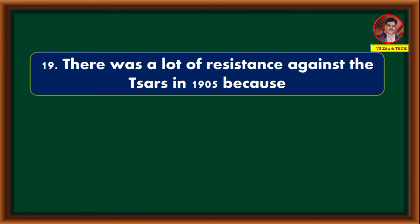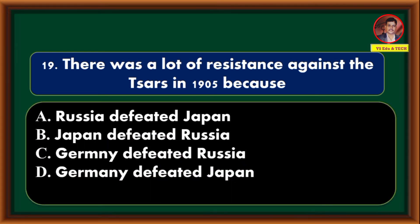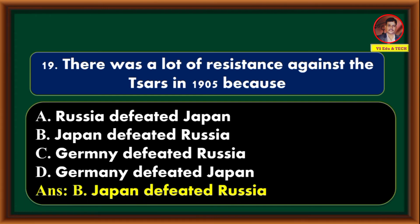There was a lot of resistance against the czars in 1905 because — Russia defeated Japan; Japan defeated Russia; Germany defeated Russia; Germany defeated Japan. Correct answer is option B: Japan defeated Russia. That is why there was a lot of resistance against the czars in 1905.